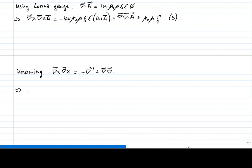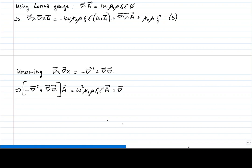We substitute the curl of the curl on the left-hand side, giving negative nabla-squared plus the gradient of the divergence applied to A. On the right-hand side, negative i omega times i omega gives omega-squared, so we have omega-squared mu-naught mu epsilon-naught epsilon times A, plus the gradient of the divergence of the vector potential, plus mu-naught mu times the current density. The gradient of the divergence terms cancel on both sides.